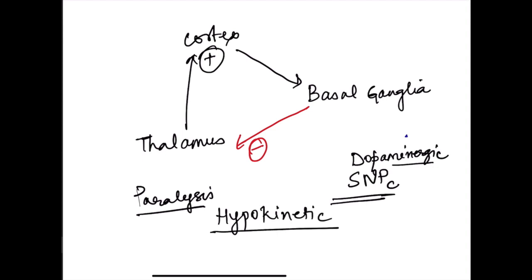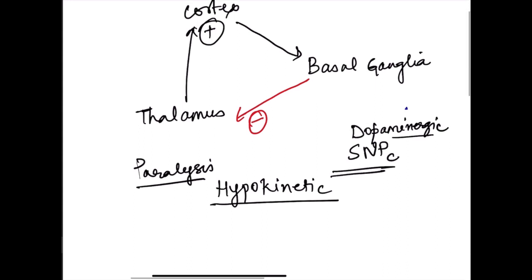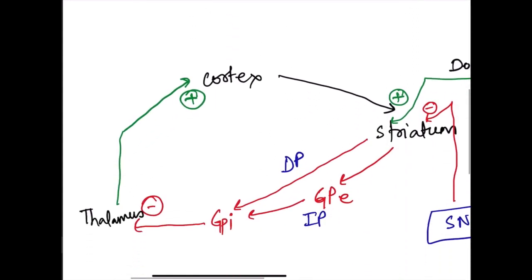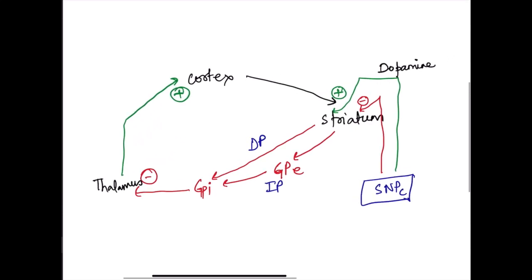This hypokinetic disorder is known as Parkinson's disease. To understand how parkinsonism is occurring and what are the physiological bases of its signs and symptoms, we need to understand a little bit about the basal ganglia circuit. Here this diagram is showing the cortex–basal ganglia–thalamic cortex loop.